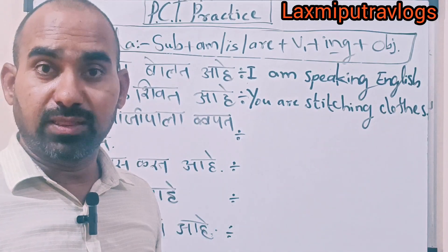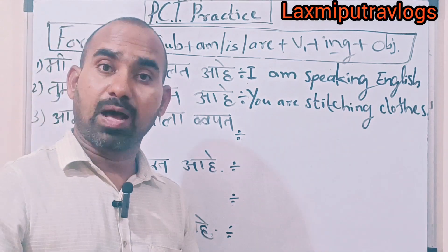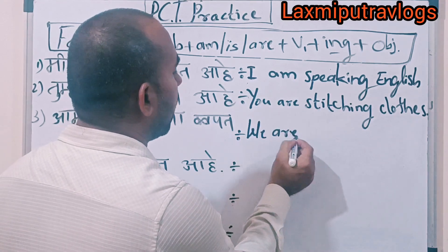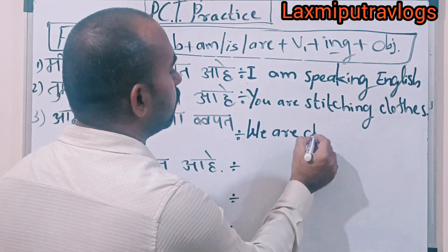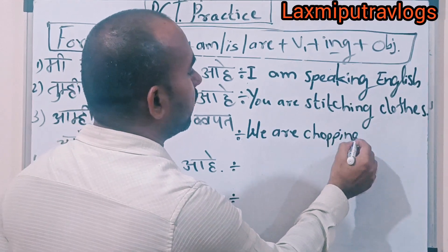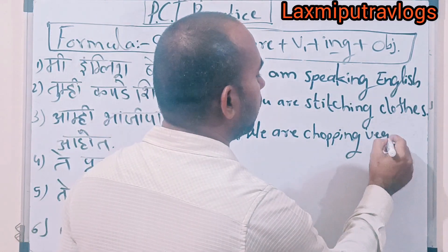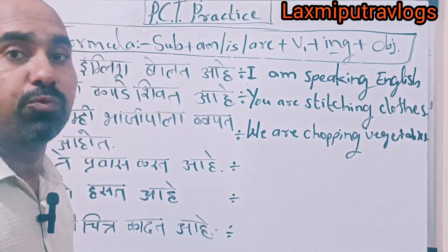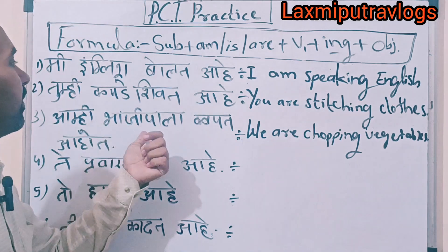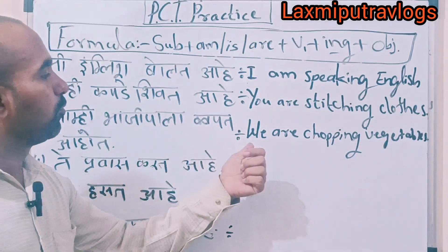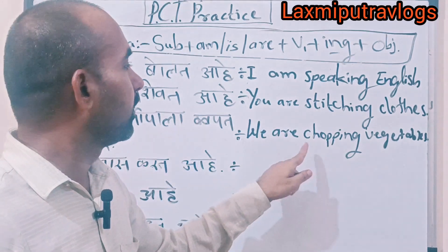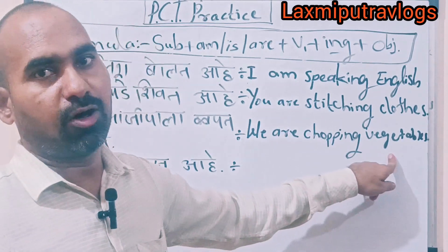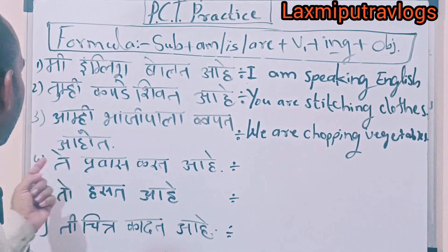Next sentence in Marathi: 'Amy bhaji pala kaapate' — what is Amy doing? Amy is chopping vegetables. So the sentence is: 'We are chopping vegetables.' Here, 'we' is the subject, 'are' is the helping verb, 'chopping' is the V1 continuous form, and 'vegetables' is the object.